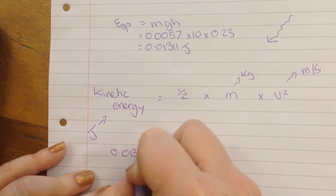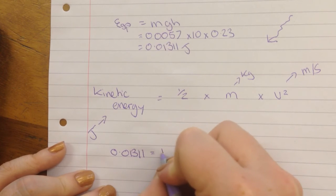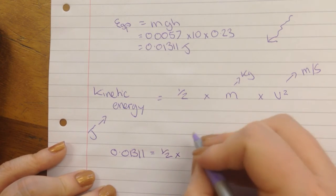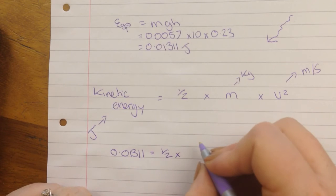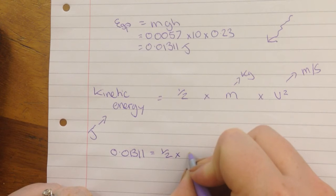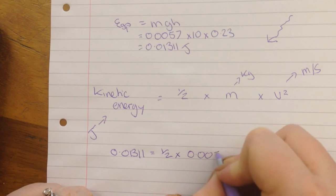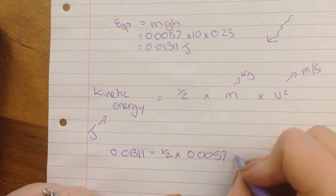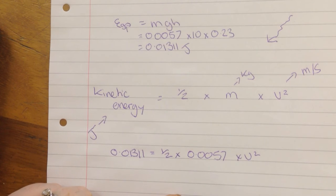It's 0.01311 is equal to half times the mass. We have the mass from before. Mass is 0.0057. And that is times the velocity squared.